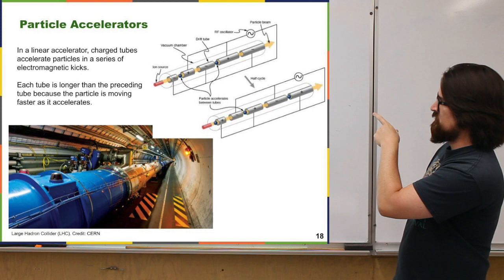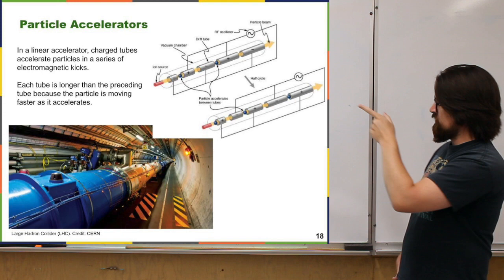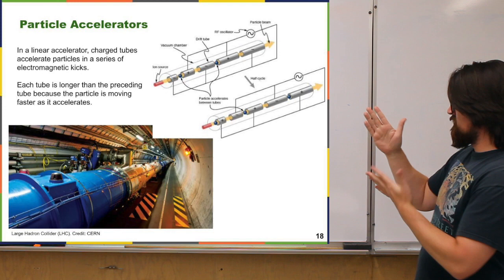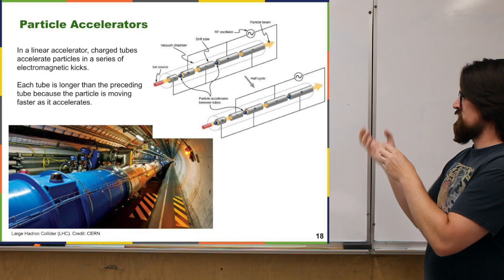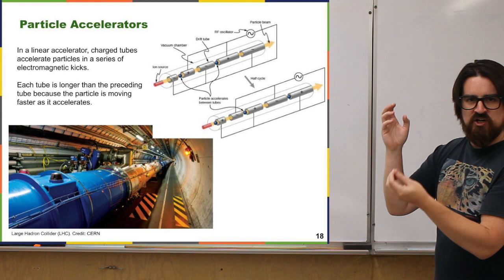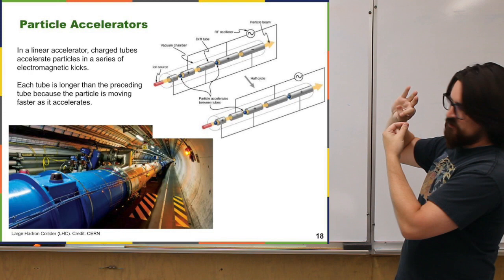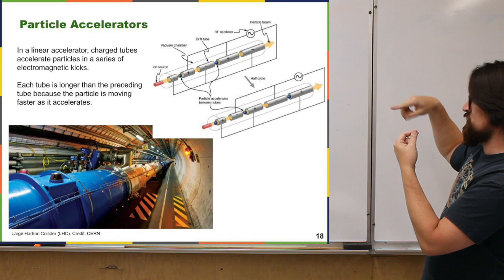The diagram on the right is a linear particle accelerator, and it works basically just by switching the positive and negative charge of these tubes in the accelerator. You start out with the source of whatever your particles are — it says 'ion,' but whatever the particle is that you're trying to accelerate — you start out there on the left. Whatever its charge is, you have it set up so that the first little tube is the opposite charge of that. So if your particle is negatively charged, then right to begin with you want that tube to be positively charged, and it will attract that particle.